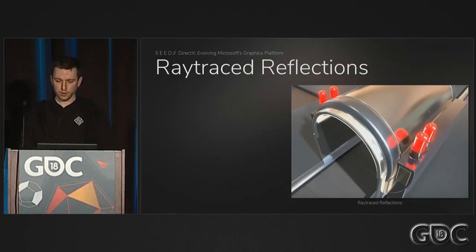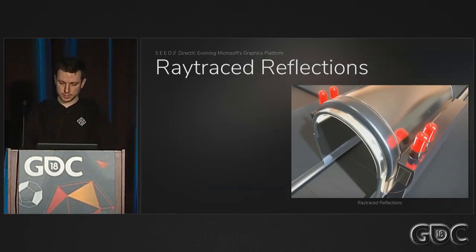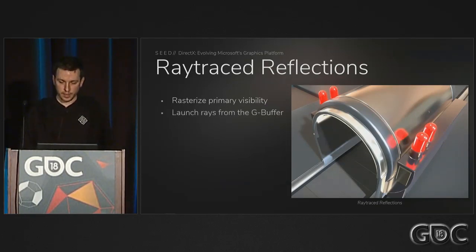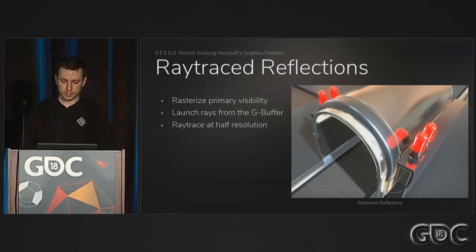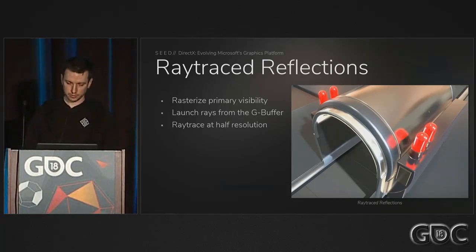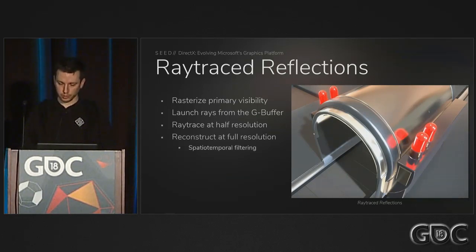Let's look at how we handled reflections with ray tracing. We took a hybrid approach where we first rasterize primary visibility, then launch rays from the G-buffer. All of this is done in half resolution on two-by-two blocks — though you can do it in full resolution if you want. We then do a spatial-temporal reconstruction at full resolution.